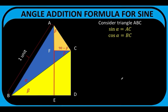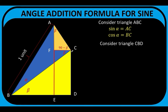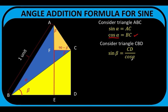Now let's consider triangle CBD, which is the yellow right triangle. In this yellow right triangle, the sine of beta is equal to the opposite side CB over the hypotenuse BC. But we know that BC equals cosine alpha, so sine beta equals CB over cosine alpha. Solving for CB by multiplying both sides by cosine alpha and applying the symmetric property of equality, we have CB equals cosine alpha sine beta. Since FCDE is a rectangle, the length of segment CB equals the length of segment FE. Therefore, FE equals cosine alpha sine beta.